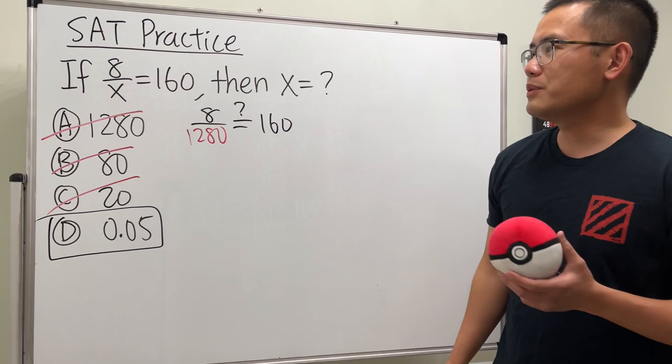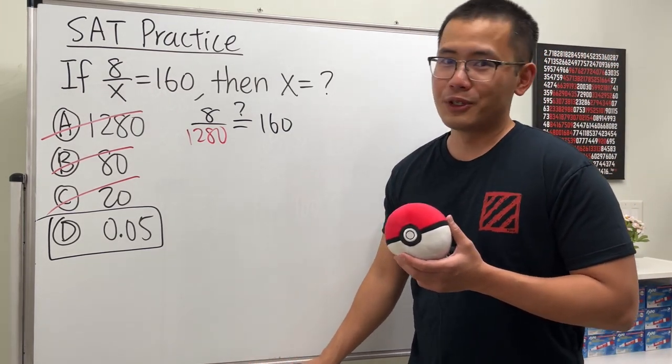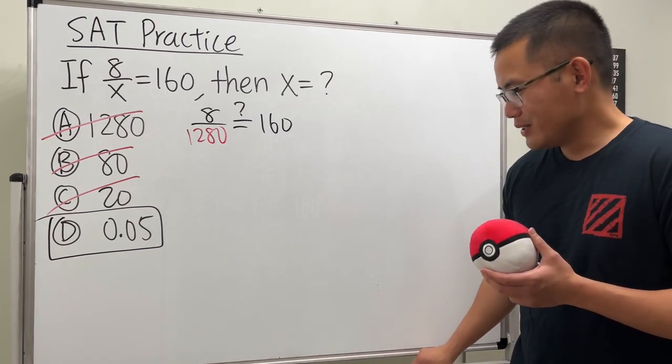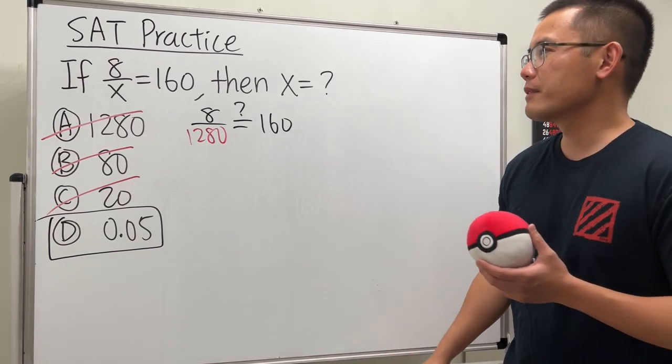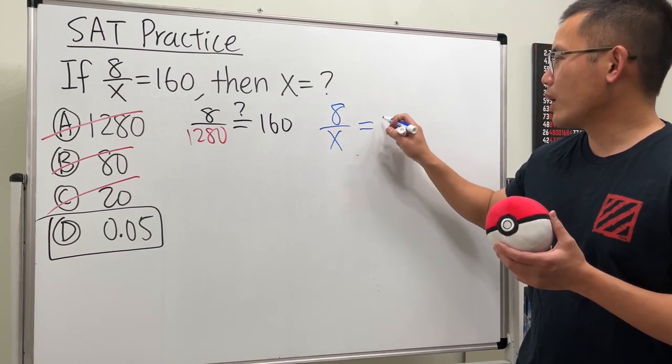This is very nice. And of course, I will have to show you guys the actual math way of solving this just for learning purposes. So here's the deal. When we have 8 over x, it's equal to 160.